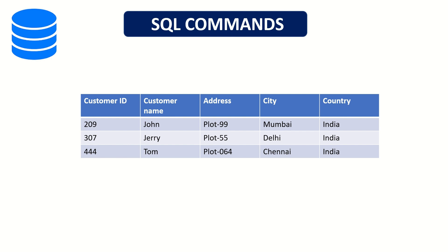And there are columns like customer ID, customer name, address, city, country — so we need to create columns like this. And if we want to insert data into the table, then we need to create a customer record like customer ID, John as customer name, address Plot 99, city Mumbai, country India. To insert and create all of this, we need to command the RDBMS system through SQL language.